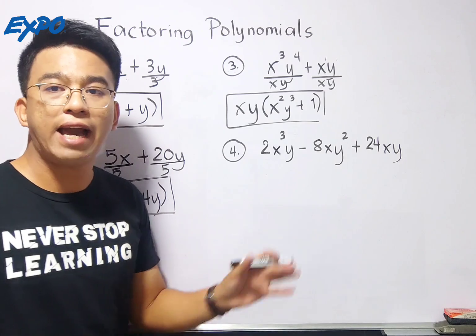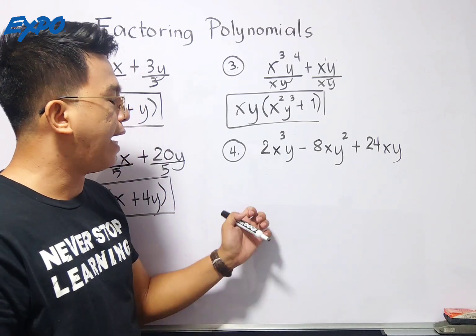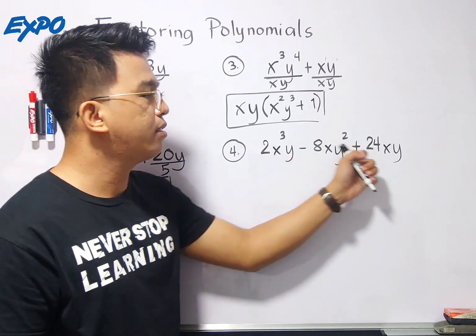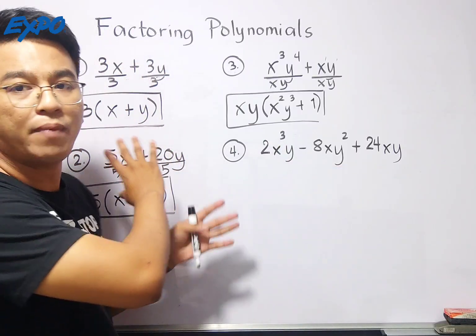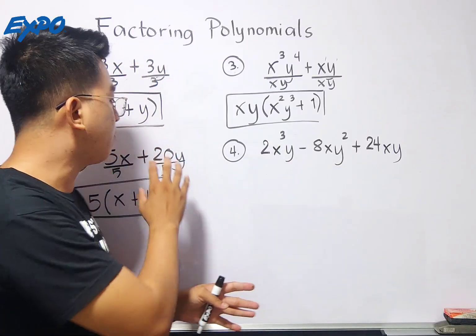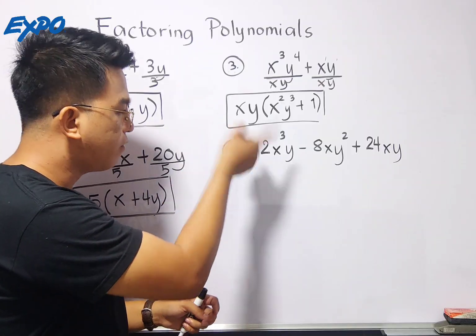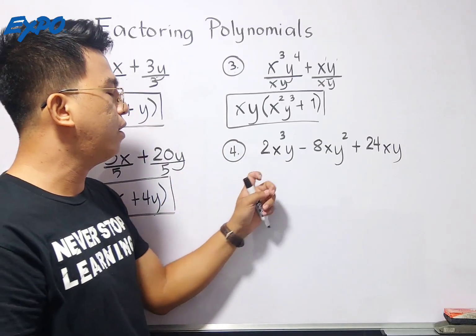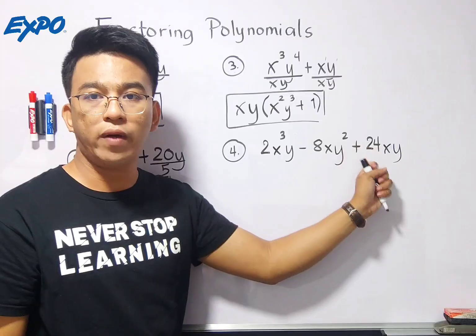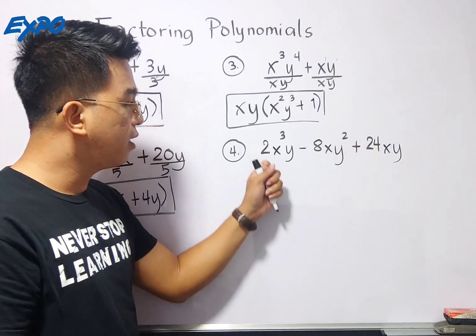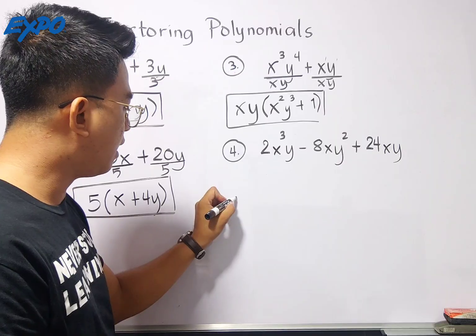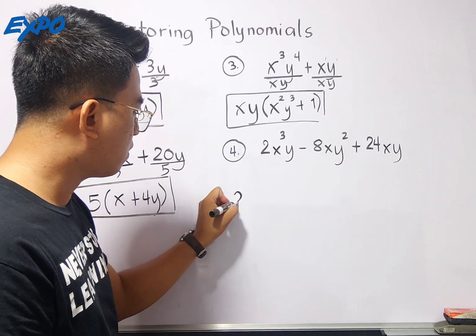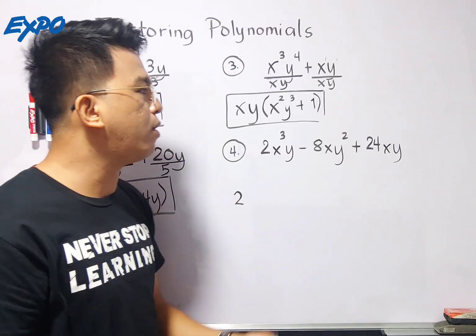Let's have item number 4. For number 4, we have 3 terms. Now, what will happen? We have coefficients. We also have the variables. Same thing, we need to combine our knowledge from number 1, 2, and 3. For the numbers or the coefficients, we have 2, negative 8, 24. And obviously, the GCF is equal to 2. We got 2 here. Okay?